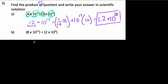For the next problem, we divide: 8 divided by 2 is 4, and 10 to the 12th divided by 10 to the 6th is 10 to the 6th. We subtract the exponents.